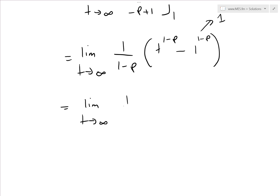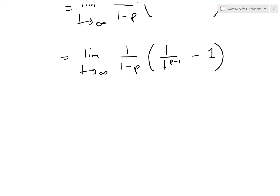So what we end up having is the limit as t approaches infinity of 1 over (1 minus p), times the quantity 1 over t to the power of (p minus 1) minus 1. We can flip t to the negative power by putting it in the denominator, changing the sign of the exponent, giving us 1 over t to the (p minus 1).